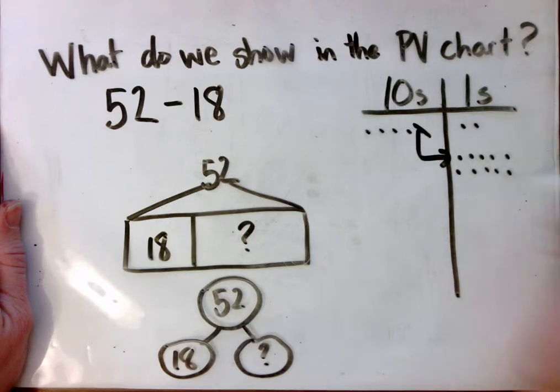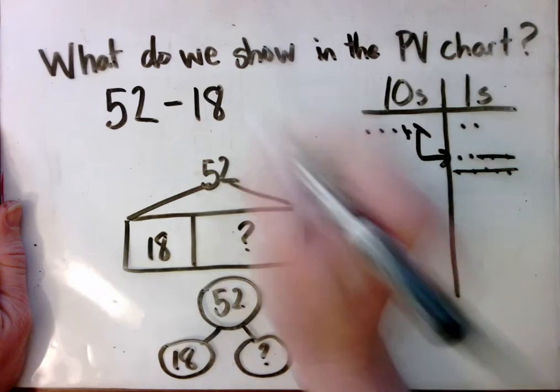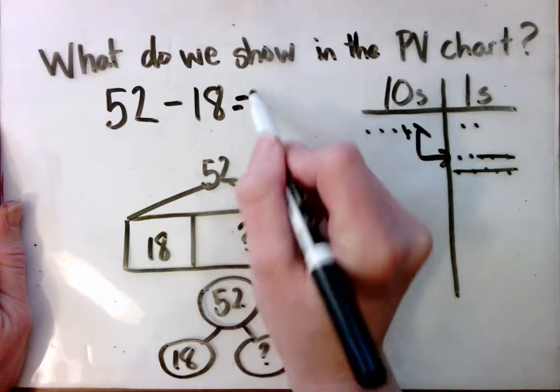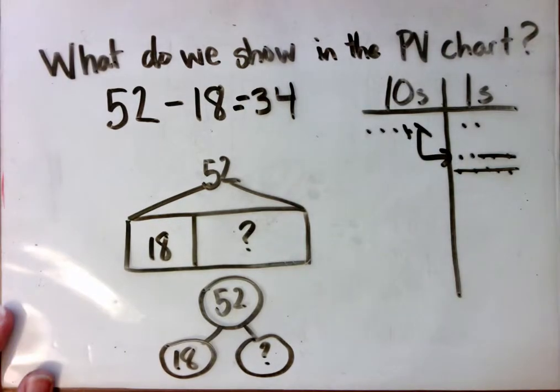So that now we can take away 8 ones and 1 ten. And we would be left with 34. And we would be right back.